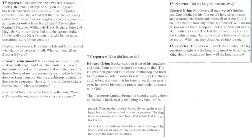I can confirm the news that Thomas Beckett, the man in charge of religion in England, has been hacked to death inside our most important cathedral. I can also reveal that the four men officially linked with the murder are knights and were apparently acting under orders from King Henry. The knights — Reginald Fitzhurst, William de Tracey, Richard Brito, and Hugh de Moorville — have fled into the stormy night. If they really are Henry's men, this will be the most sensational story of the century.